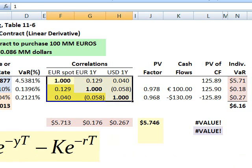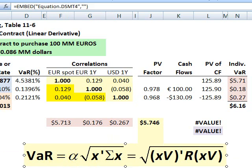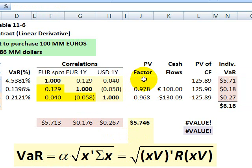Here's our correlation matrix as an input assumption. Now we can calculate the value at risk for this instrument. The other inputs we need include a column for the present value of the factor. That's just a function of the interest rates. For example, 0.978 is just the present value factor or discount factor that corresponds to the euro interest rate.